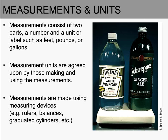You might notice on bottles at the store, such as this distilled white vinegar bottle, they list two different sets of measurements. This bottle has 32 fluid ounces of vinegar, equivalent to a quart, or 946 milliliters. Fluid ounces belong to the US system and milliliters to the metric system. Similarly, this bottle of ginger ale lists one liter (metric) or 33.8 fluid ounces (US system).